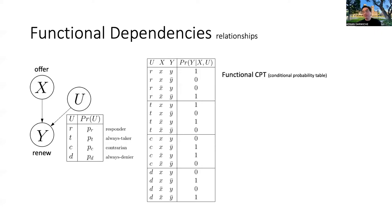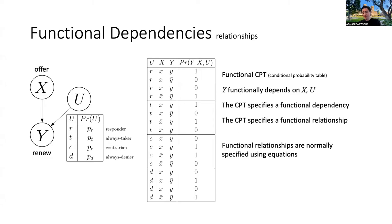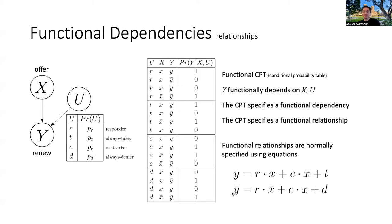This is called a functional CPT — a functional conditional probability table. We say Y functionally depends on X and U, and the CPT specifies a functional relationship. When you have this situation, you typically do not specify a CPT but use equations to give the value of Y given X and U. For example, Y would be true if we have a responder and X is true, or a contrarian and X is false, or an always-taker. When we get to structural causal models, this equation-based representation is what's used.